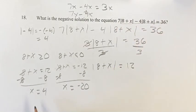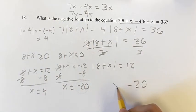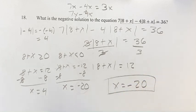So the two solutions to this equation are x is equal to 4 and x is equal to negative 20. Again, we're looking for the negative solution, which is going to be negative 20. So this is going to be our answer.